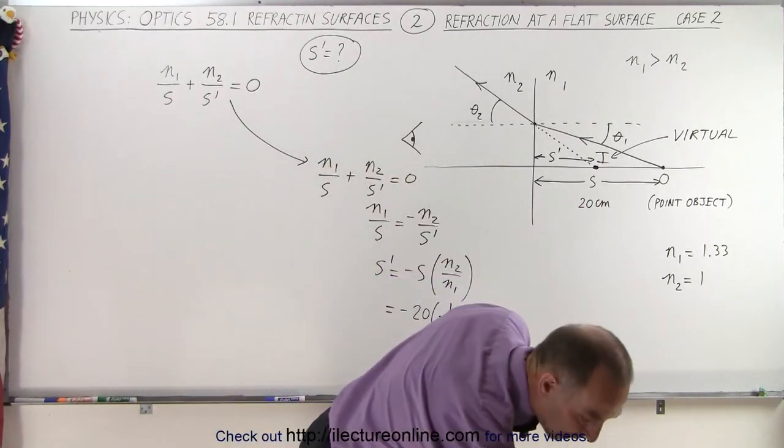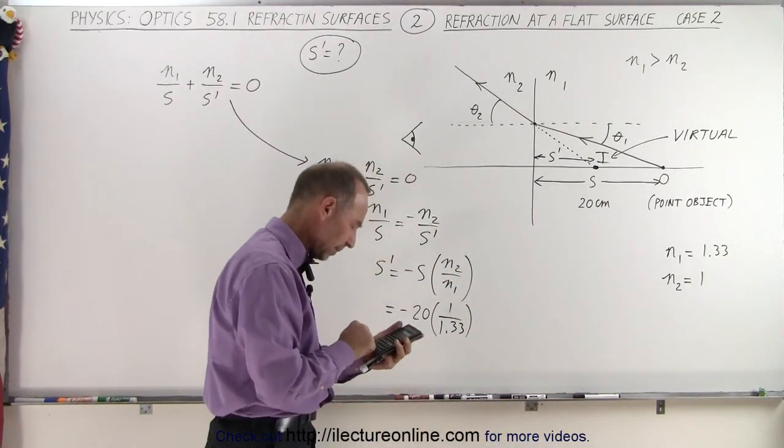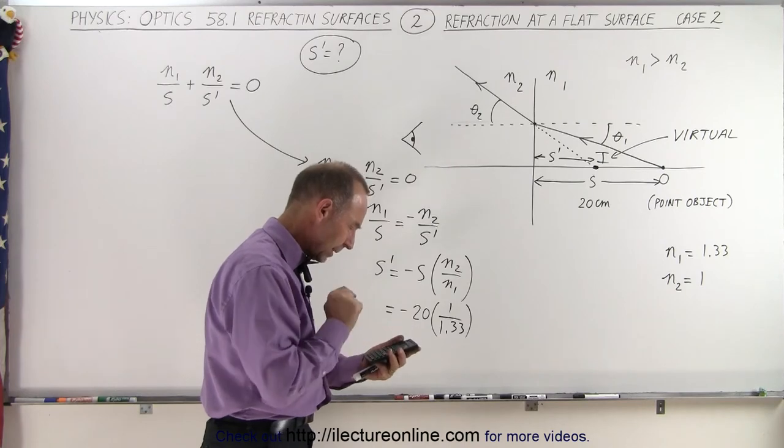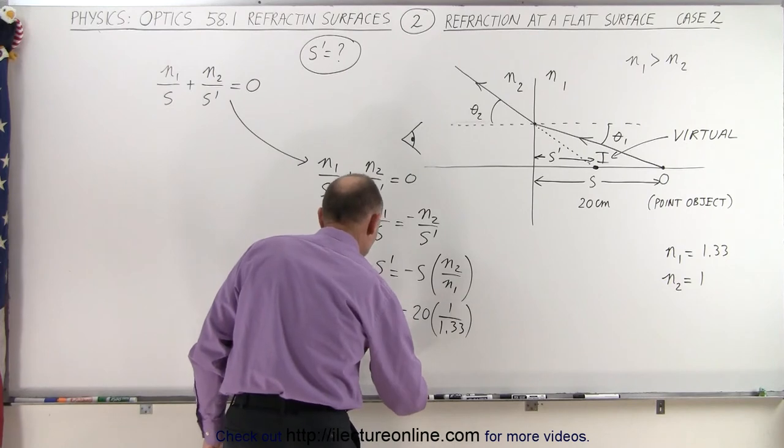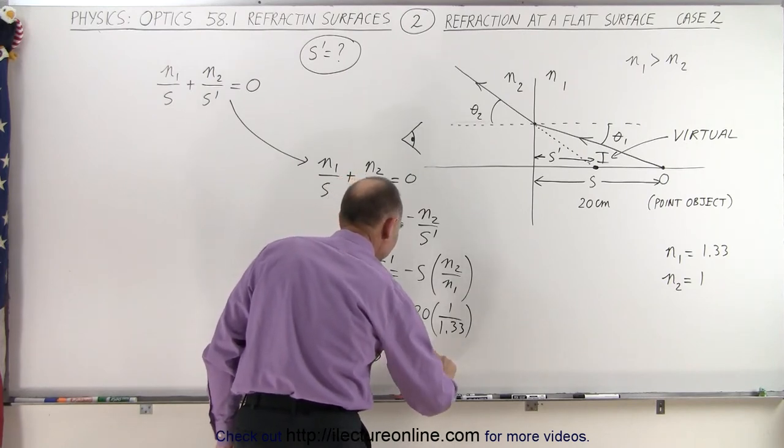So 20 divided by 1.33, that gives us 15, well, right about 15. All right, that means that S' is equal to minus 15 centimeters.